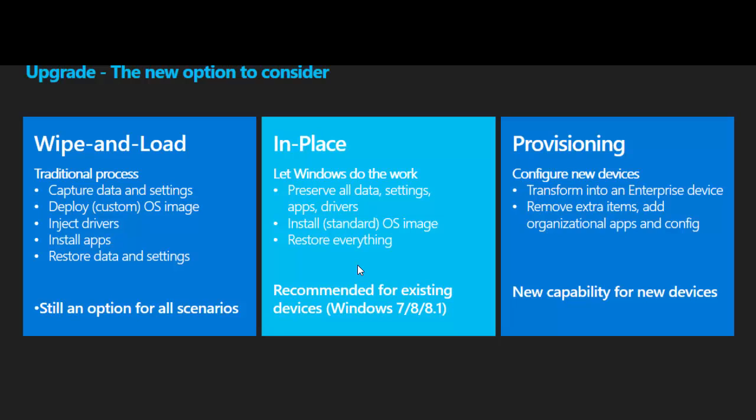Let's focus on the deployment choices. The traditional process for a lot of organizations, when it's come time to do a major OS update, has been a wipe and load. With a wipe and load, we capture the data and settings — some organizations may do a full PC backup just in case — but if you just capture the user data and settings, you can deploy the new operating system, inject the appropriate drivers, install the apps, and then restore the user data and settings.